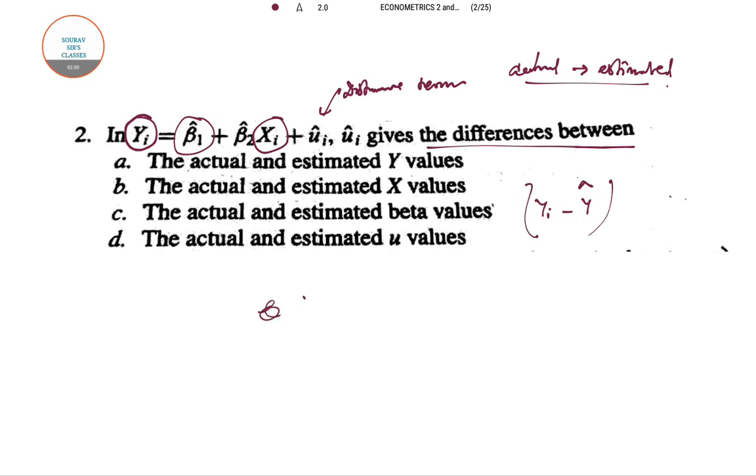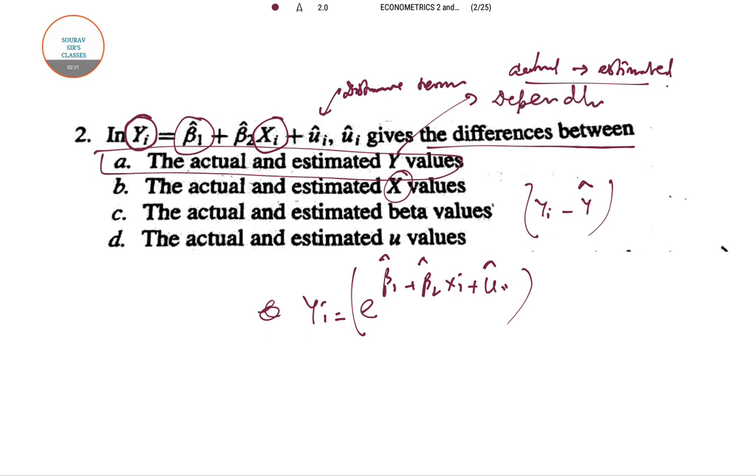So actual value of y estimated, so yi this is the actual minus estimated yi, y hat, this thing is being provided. You can also restructure the equation as yi equal to e to the power beta 1 hat plus beta 2 hat xi plus ui cap. So this is the formational structure and in this case our answer is A. Remember that it's not the x values, it's the dependent variable structure it explains.